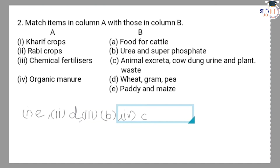The fourth item is organic manure. The answer is (c) animal excreta, cow dung, urine, and plant waste, which are used as organic manure.